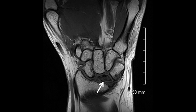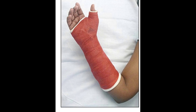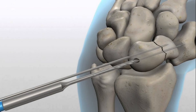Available treatment options: Treatment varies depending on the location of the fracture and the extent of bone movement. Options may include immobilization with a splint — if the fracture is simple, it can be treated with a splint for 6 to 12 weeks, during which the patient should avoid moving the wrist or putting any pressure on it. In some cases where the fracture is mobile or in a sensitive area of the bone, surgical intervention may be needed to stabilize the bone using screws or braces.